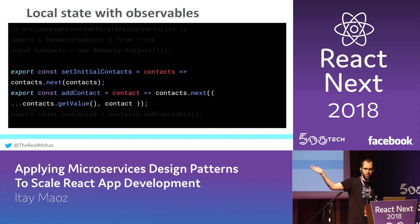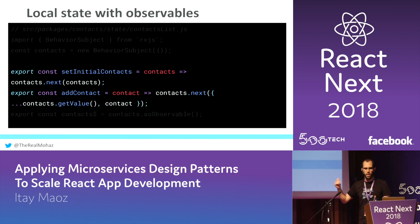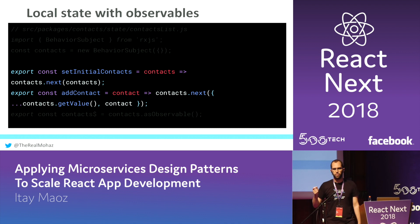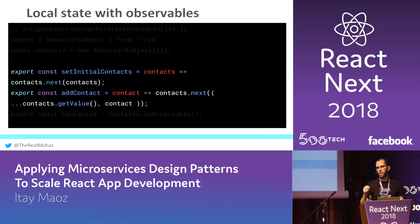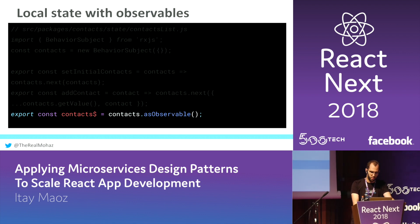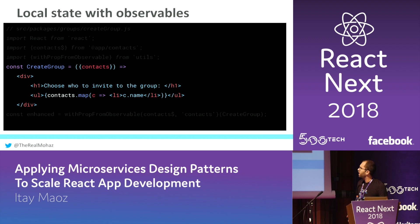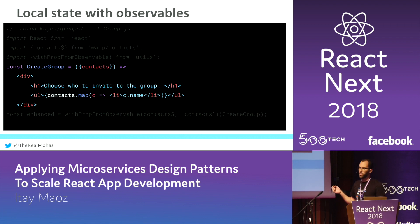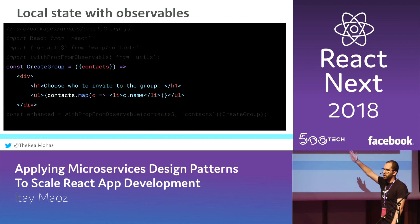So we create a list of contacts which starts as an empty object and provide two functions to update this piece of state. We set an initial contacts list for when the app is first loaded, and we allow different parts of the app to add contacts. For example, in the messaging app, we might want to allow sending a contact in a chat and just adding it to your contacts list. The final part is exposing your contacts as an observable to the rest of the app.